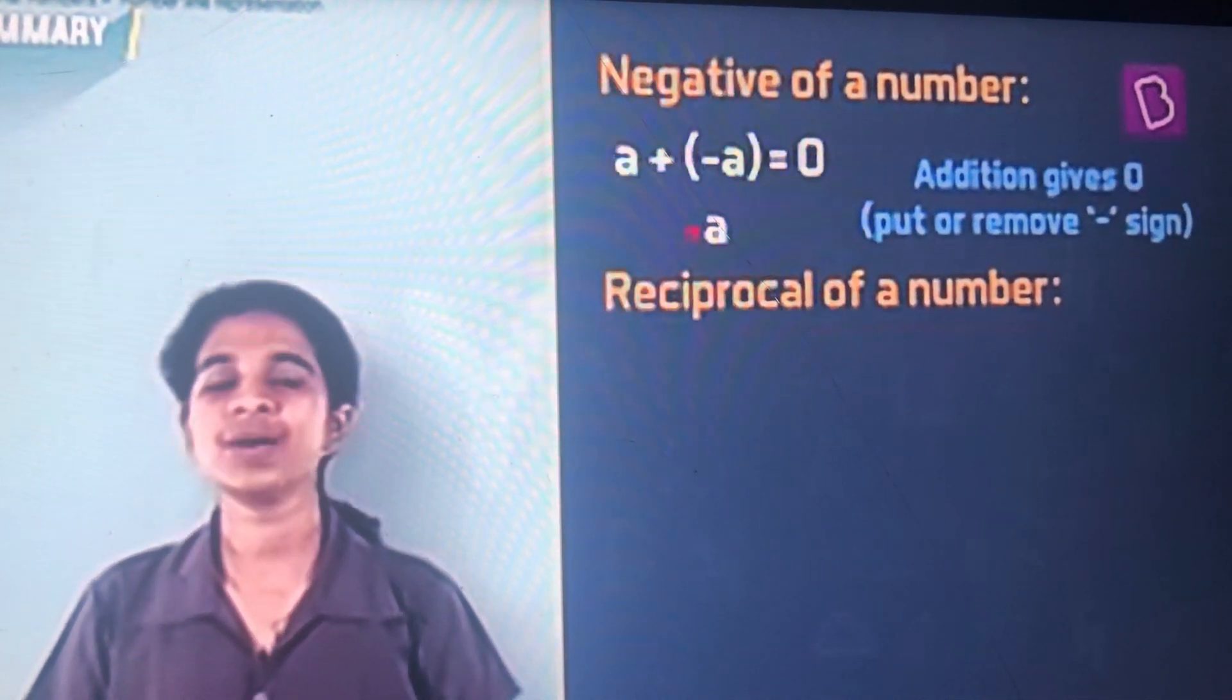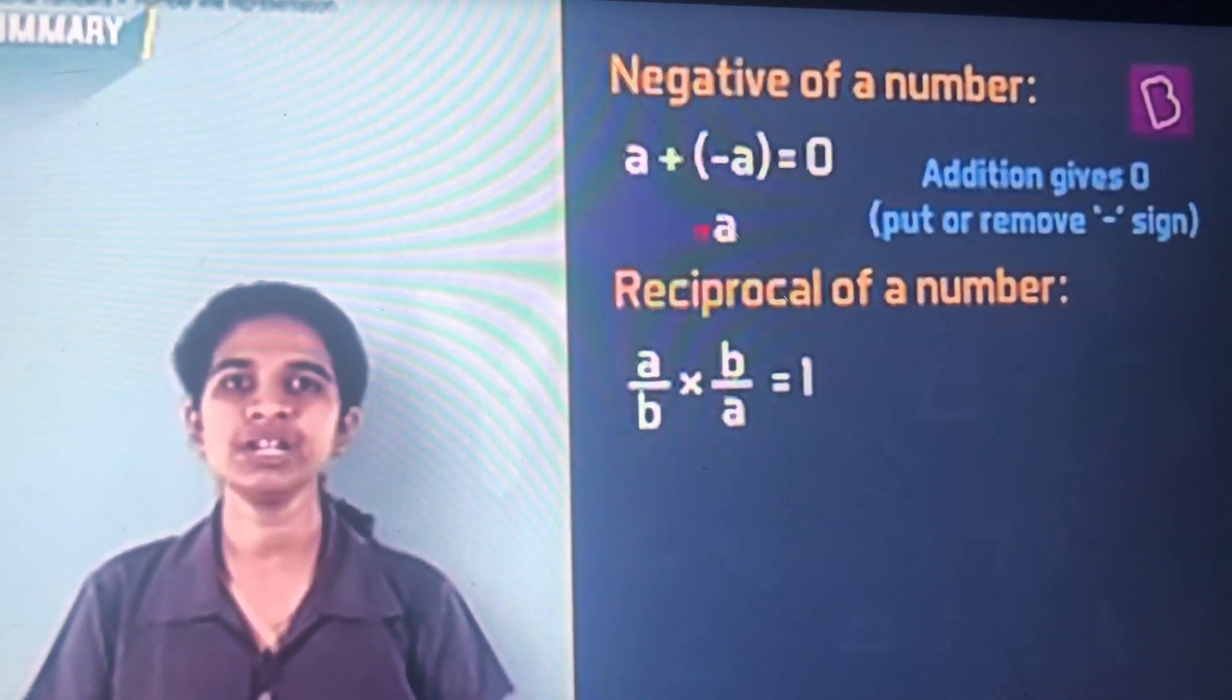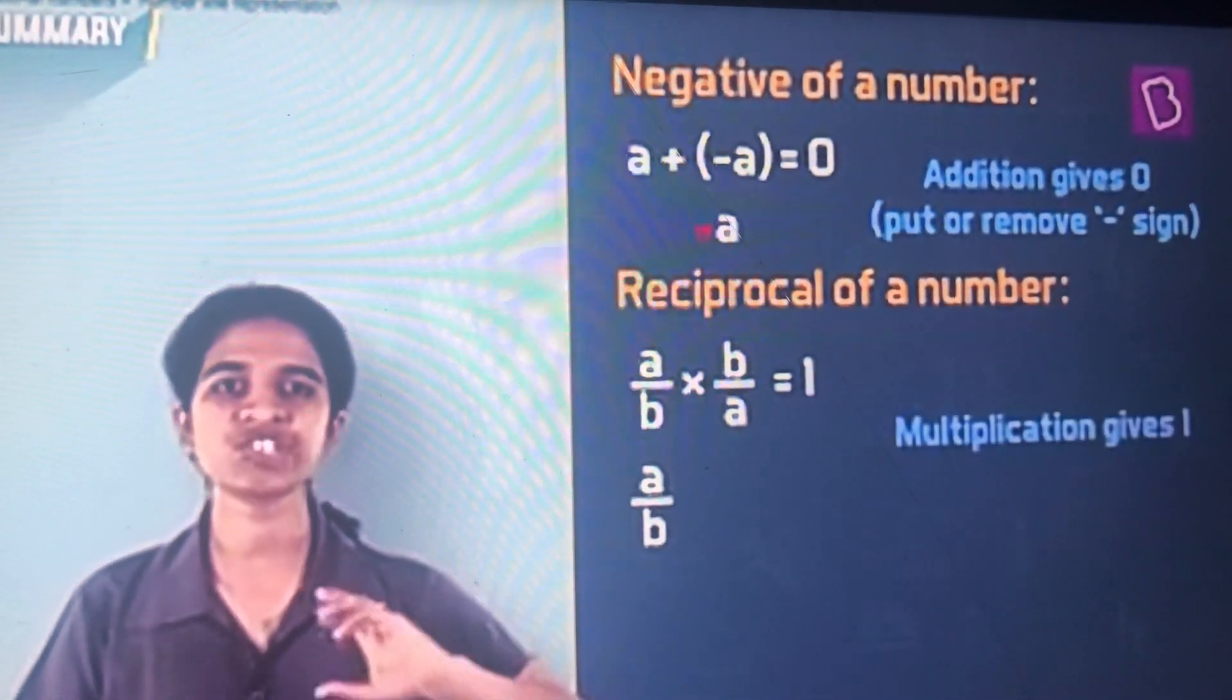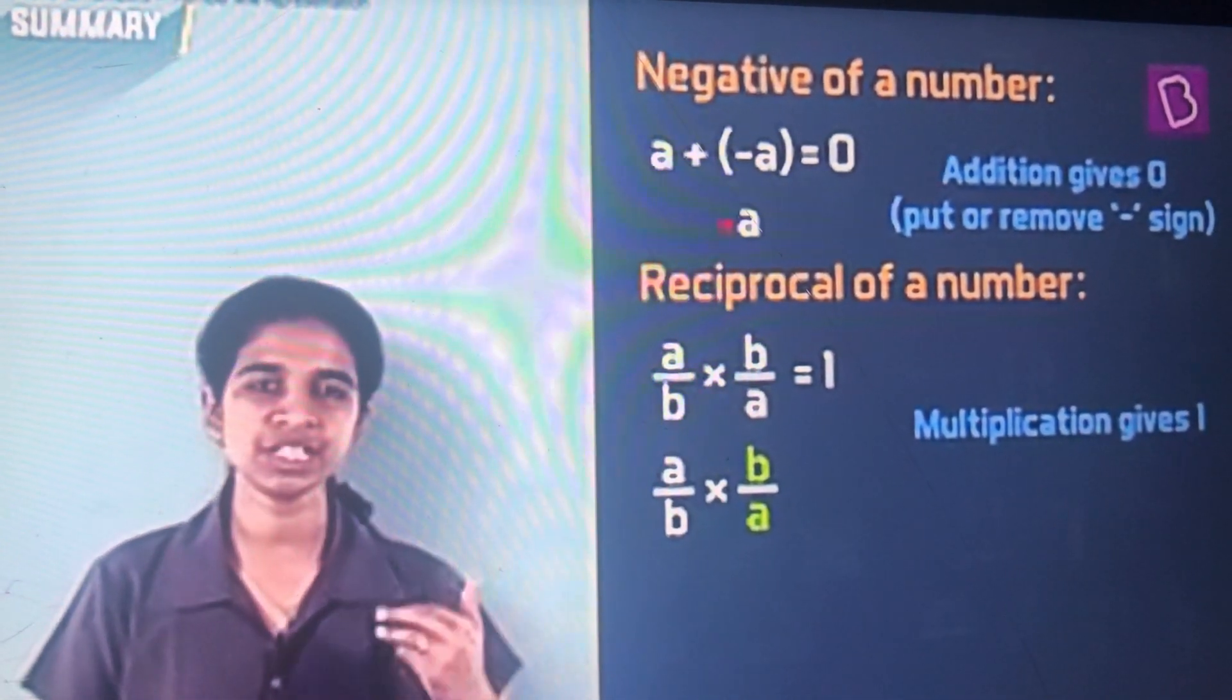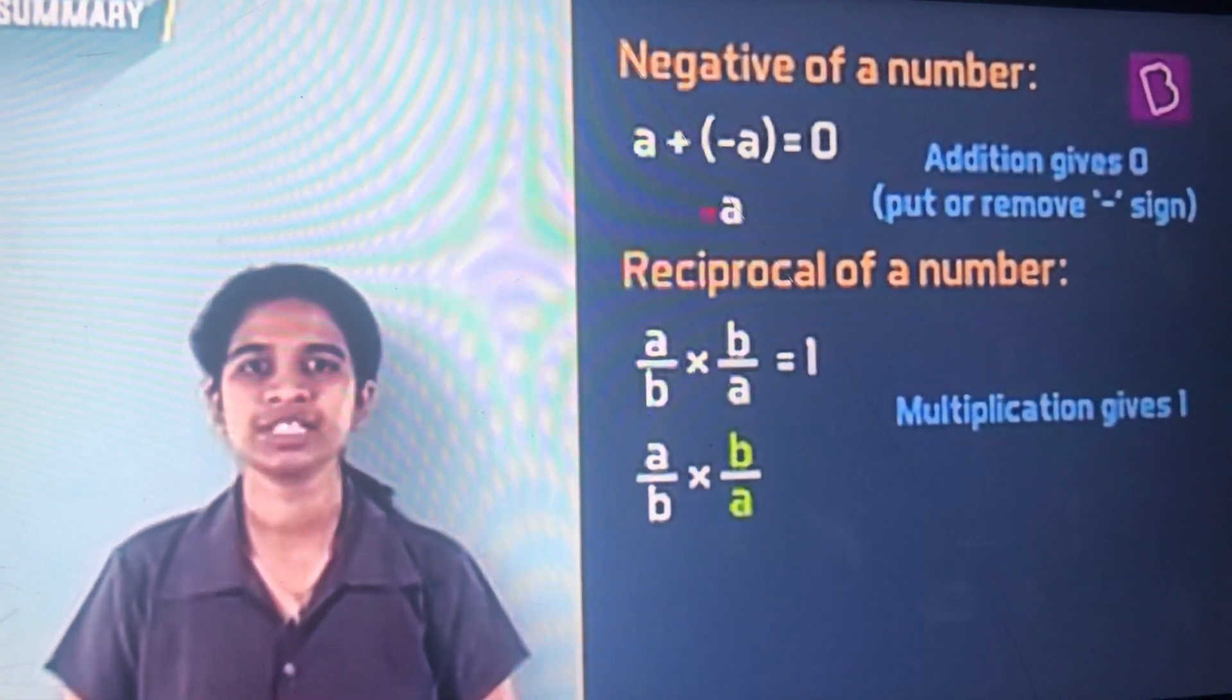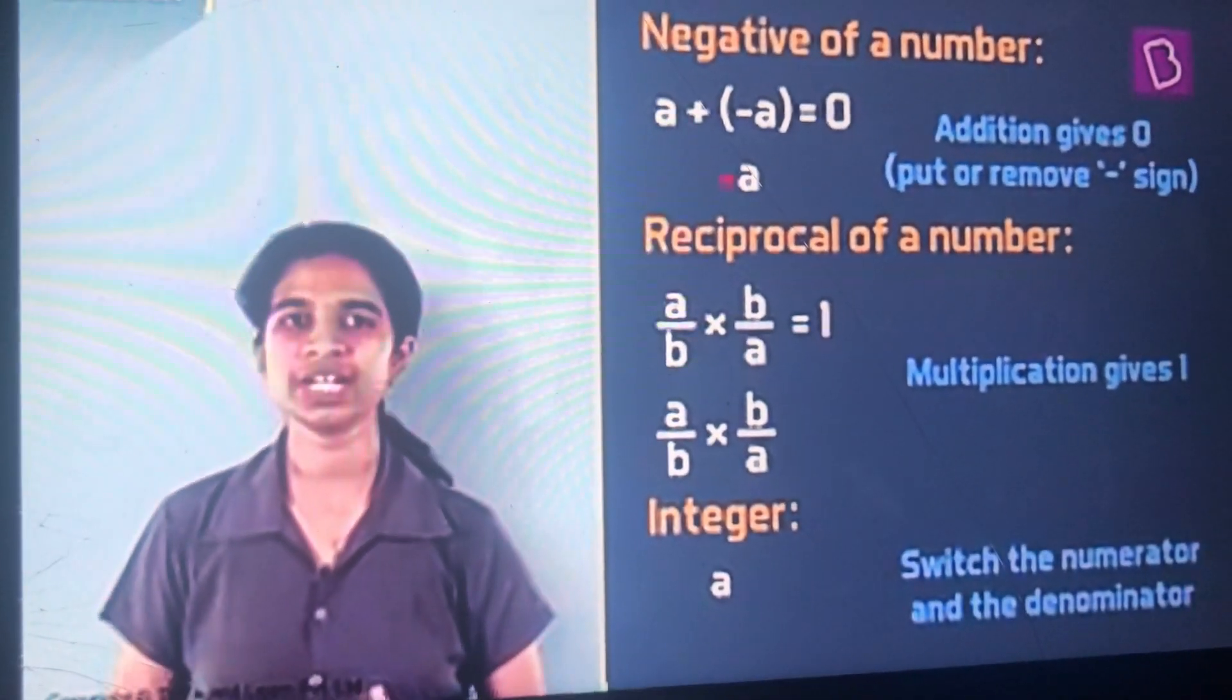Reciprocal of a number, nothing but when multiplication gives 1. The way to find a reciprocal is just reverse the number and keep the sign as it is. Make the numerator the denominator, the denominator the numerator. If you have an integer, which does not have a denominator,